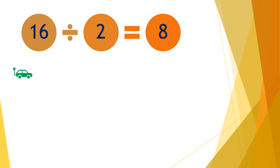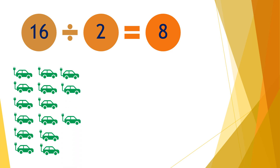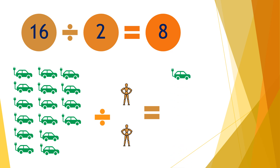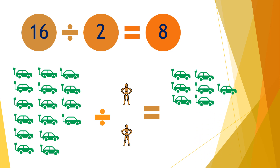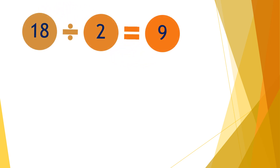Moving on to the next question: sixteen divided by two equals eight. So if you have sixteen cars and divide them by two people, each person will receive eight cars — one through eight for each person.